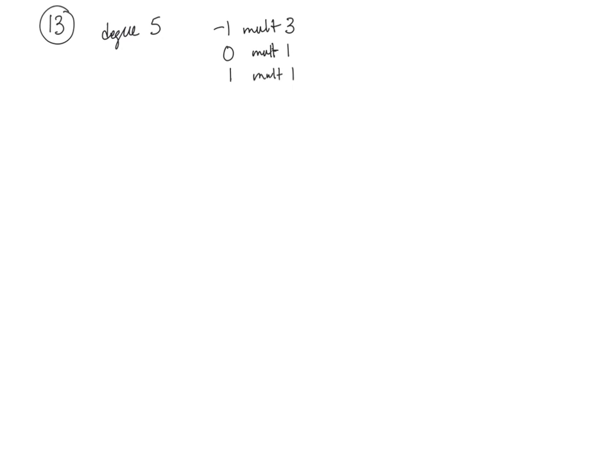In this question we're asked to find a polynomial of degree 5 that has these as its zeros. Notice that if you count up the multiplicity it comes out to 5, which is what the degree is.